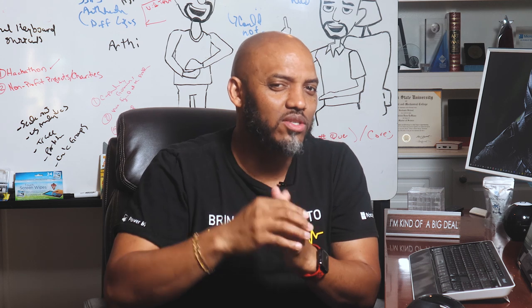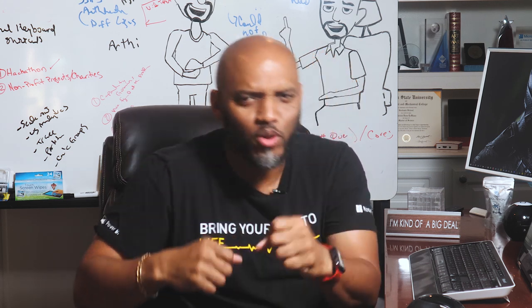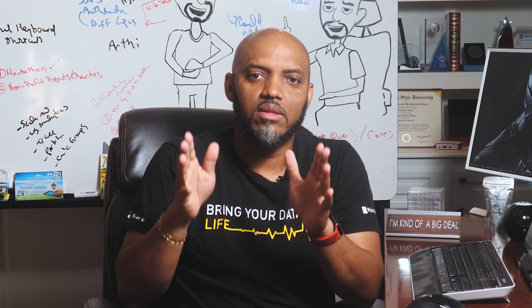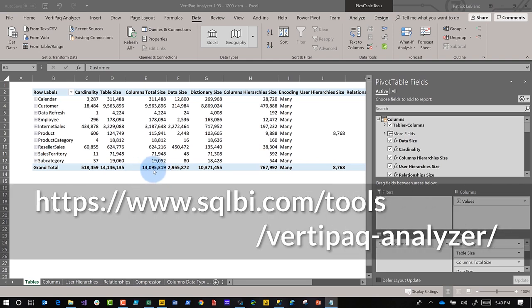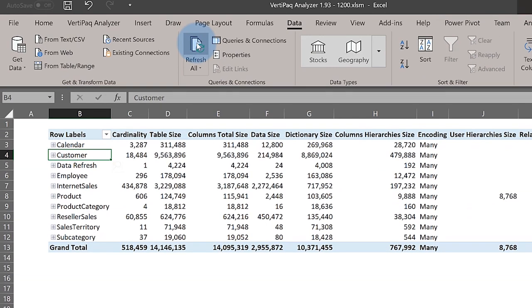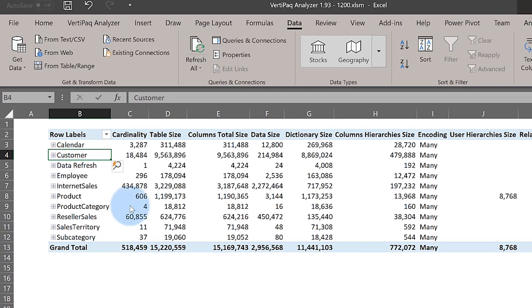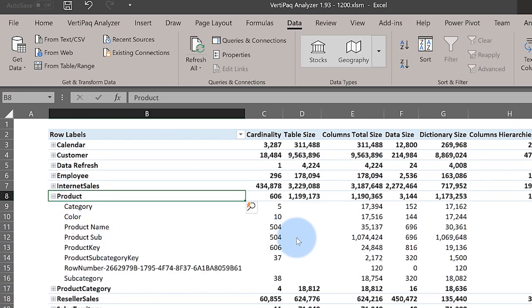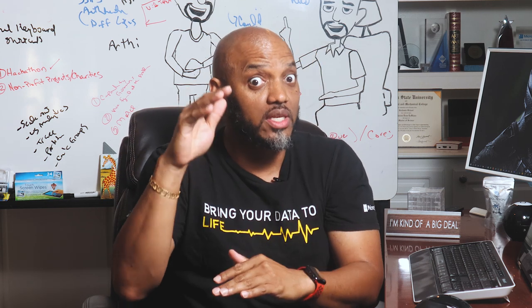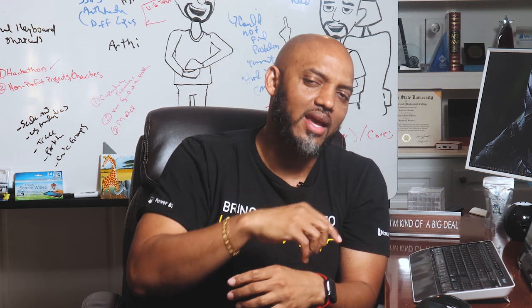The second reason to avoid DAX calculated columns is memory. When you create that column it materializes and uses additional space in memory. Before I added the column I had 14 million bytes in column sizes. After refreshing, it goes up to about 15 million — not substantial in this demo — but imagine a really large table with high cardinality columns. The more distinct values, the more space consumed, and that can add up significantly.